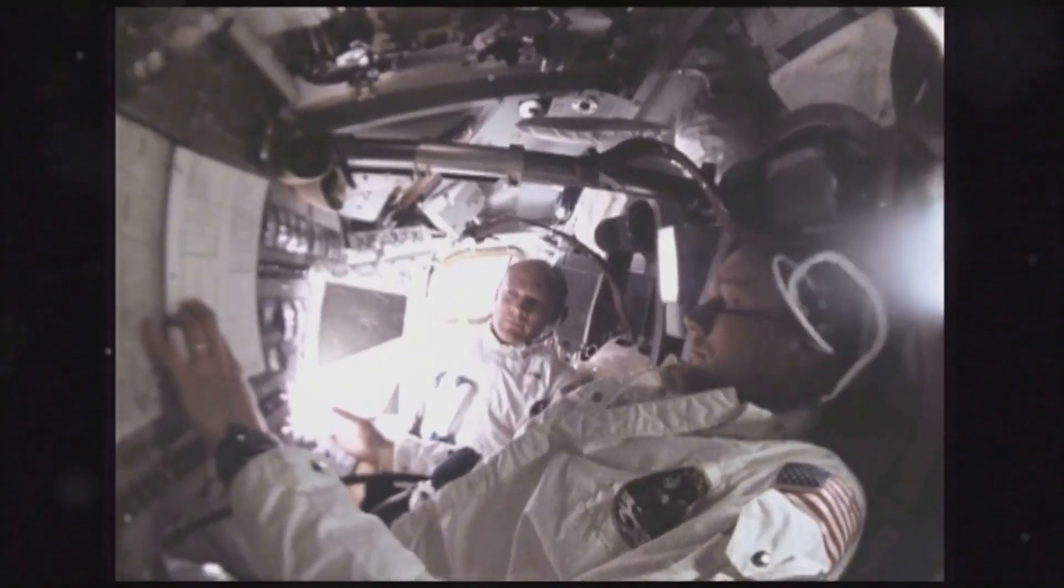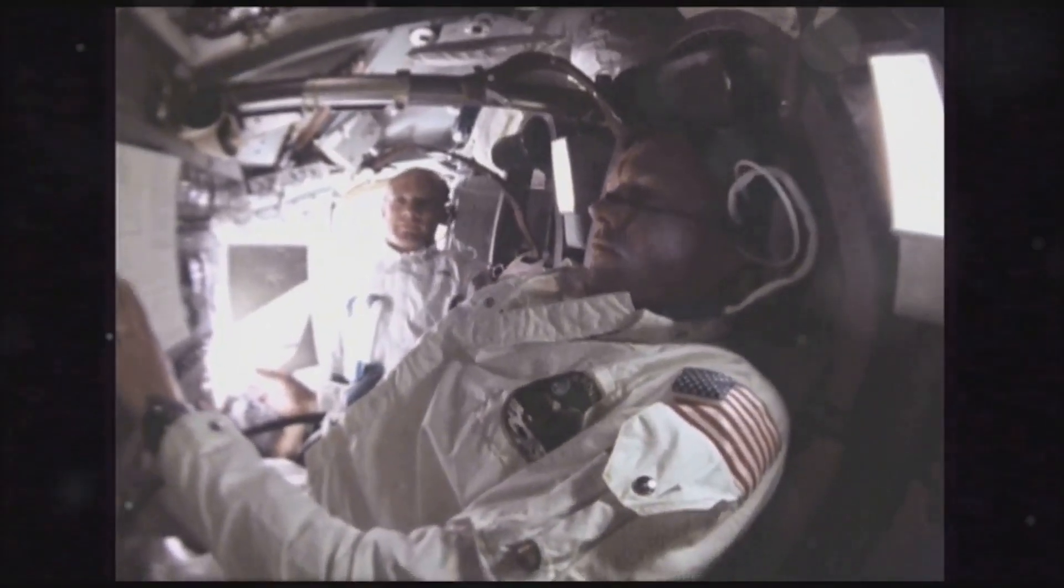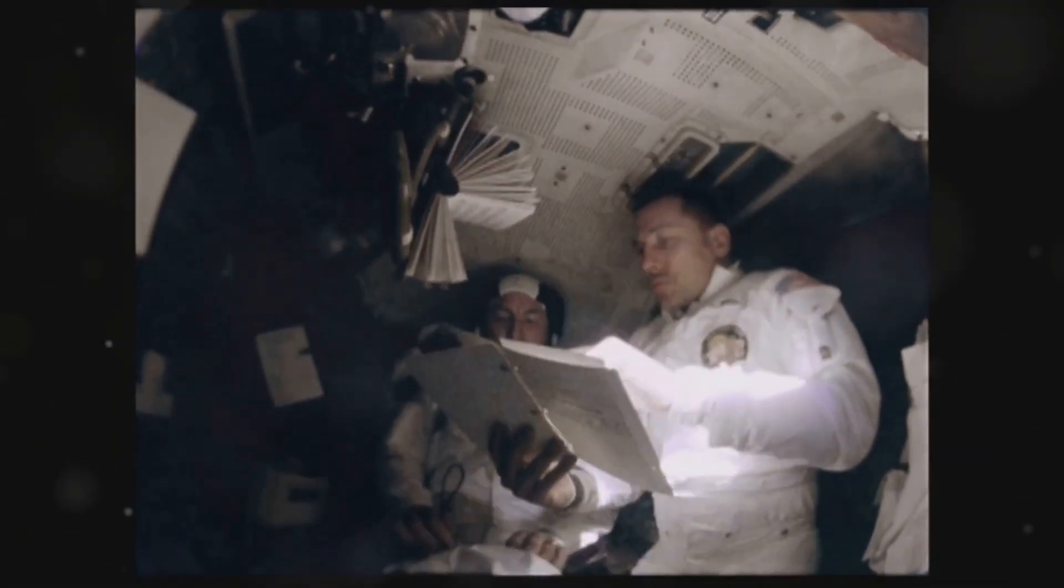For example, astronauts might say, move forward to the control panel, or look to the port side window. These relative directions help them orient themselves within the spacecraft.